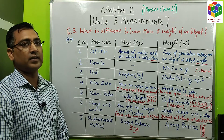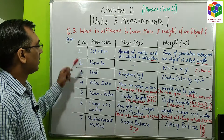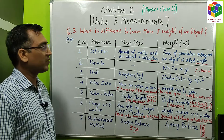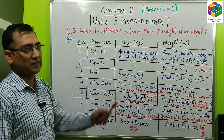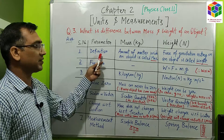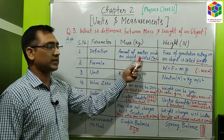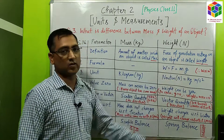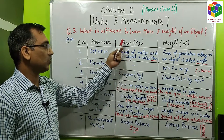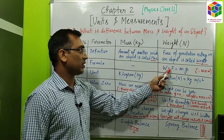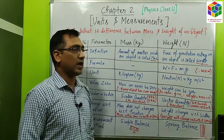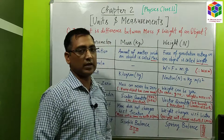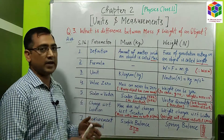Now we will discuss the difference between weight and mass of an object. The first difference is definition: the amount of matter inside an object is called mass, whereas the force of gravitation acting on an object is called weight. Formula: there is no formula for mass, but weight has the formula W = F = m × g. An important point: weight is directly proportional to mass — higher the mass, higher will be the weight.